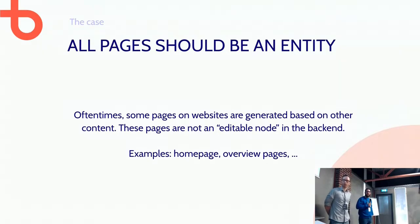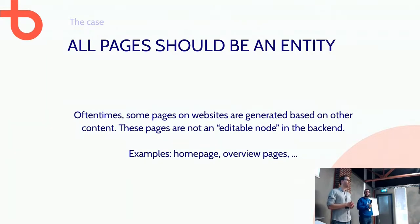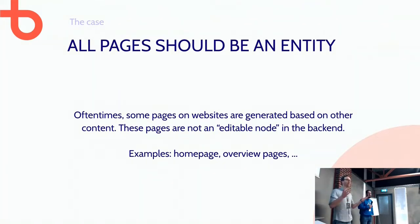Next up, slightly related: all pages should be an entity. Often some pages on your website could be generated based on other content. A pretty easy example is a home page — it's often coded based on elements picked from other content types, like a news overview, a team member overview, or a slider with fixed content.